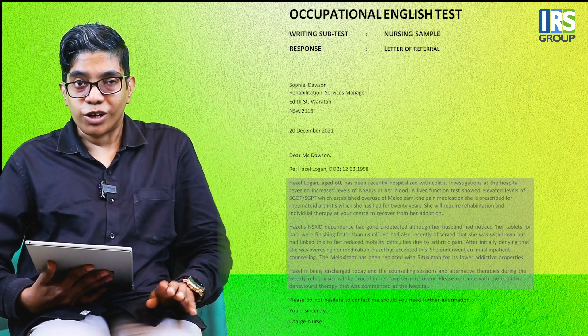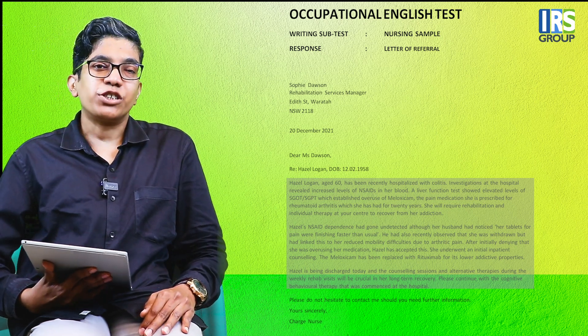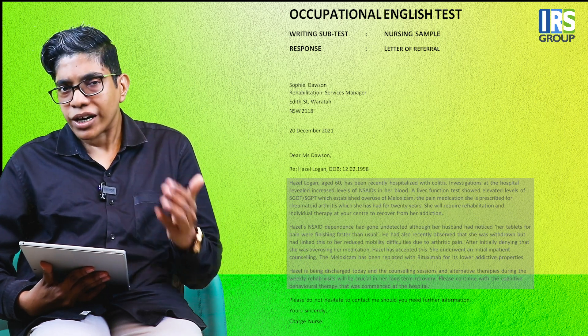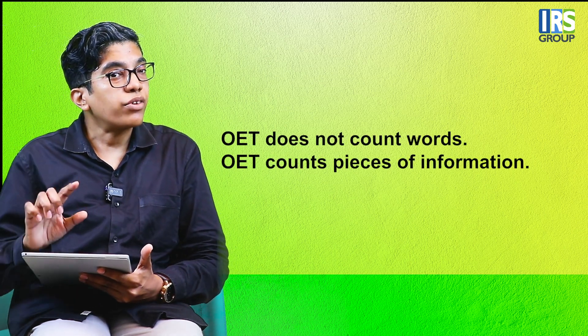That is excluded from the count — that's number one, and that's a big relief. Number two, you don't need to count individual words. In practice, for an average letter line, there is a rough calculation you can use to estimate how many lines will fit in that word count. But mostly, what's important is that OET does not count words — OET counts pieces of information.